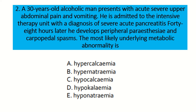First of all, we have to read the question very carefully. A 30-year-old alcoholic man presents with acute severe upper abdominal pain and vomiting. He is admitted to the intensive therapy unit with a diagnosis of severe acute pancreatitis. 48 hours later, he develops peripheral paresthesia and carpopedal spasm. The question asks: what is the most likely underlying metabolic abnormality?